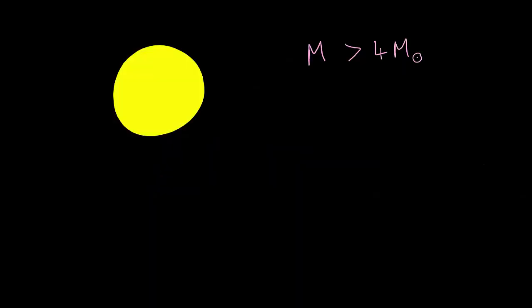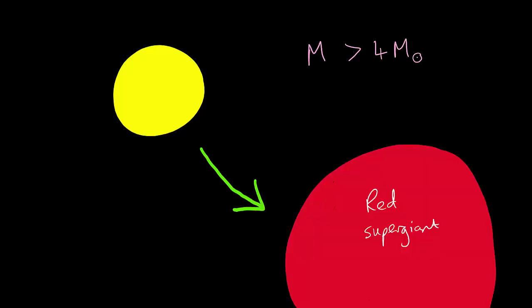But what happens to larger stars? Stars with a remnant mass above the Chandrasekhar limit or the original mass that's more than four times the mass of the Sun. Well their evolution is slightly different. Similar to low mass stars, their core will collapse and they'll begin fusing heavier elements, but they'll expand into much larger stars called red supergiants. These can be up to a thousand times the diameter of the Sun.